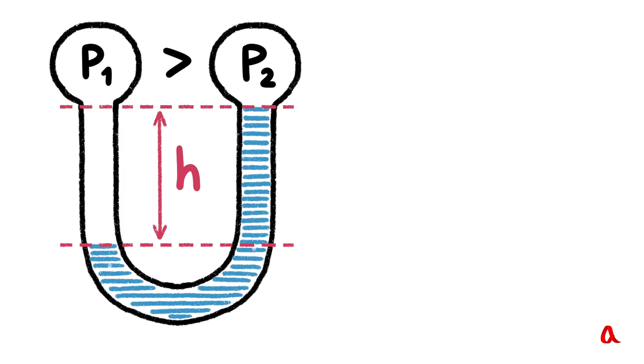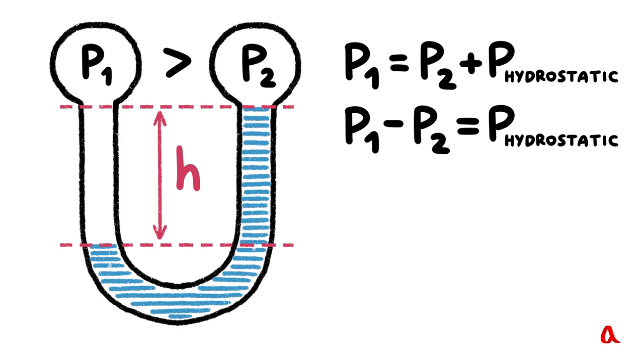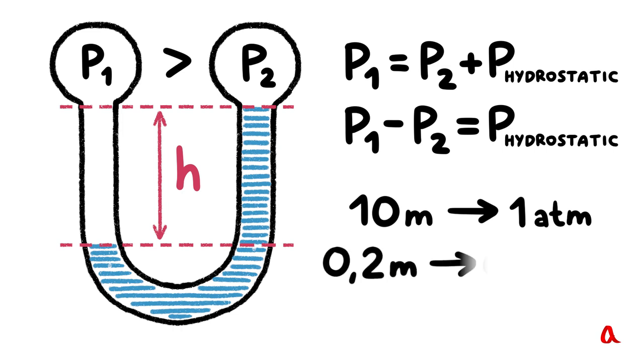Now pressure P1 is balanced up by pressure P2 and additional hydrostatic pressure, which is created by the water column between the upper and the lower levels. So the difference between P1 and P2 equals the hydrostatic pressure, which is created by the difference water column. We remember that a 10 m water column creates 1 atm pressure. So a 20 cm water column, which we have observed in our experiment, creates a 0.02 atm pressure.